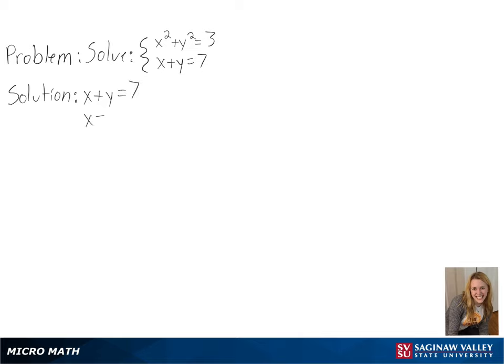To find our variables, we will use substitution, so first we can solve for x. In this case, we can substitute 7 minus y for x, and then simplify the left side expression.